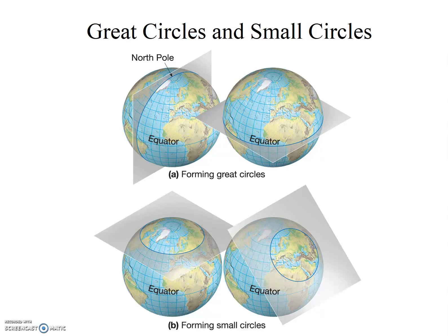Any other circle drawn on a sphere is called a small circle. It can be made by taking a plane and slicing through the Earth anywhere but through the center. Examples of small circles include the Tropic of Capricorn, the Tropic of Cancer, the Arctic Circle, the Antarctic Circle, and any other small circle you draw on the globe.